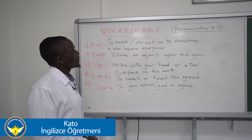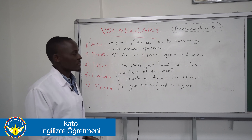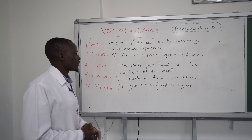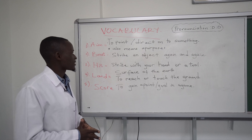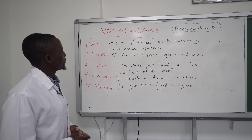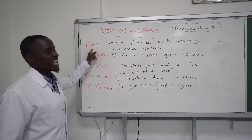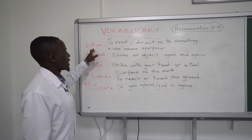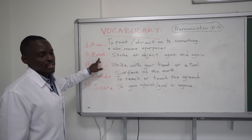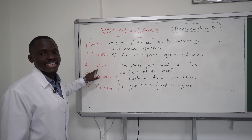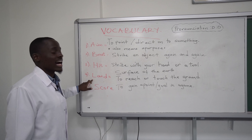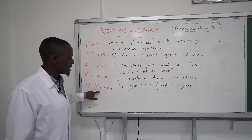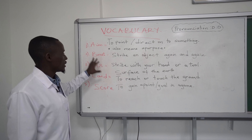Let's look at this vocabulary. There are just five words we need. The new words in the exercise: aim, beat, hit, land, score. Let's check our pronunciations.